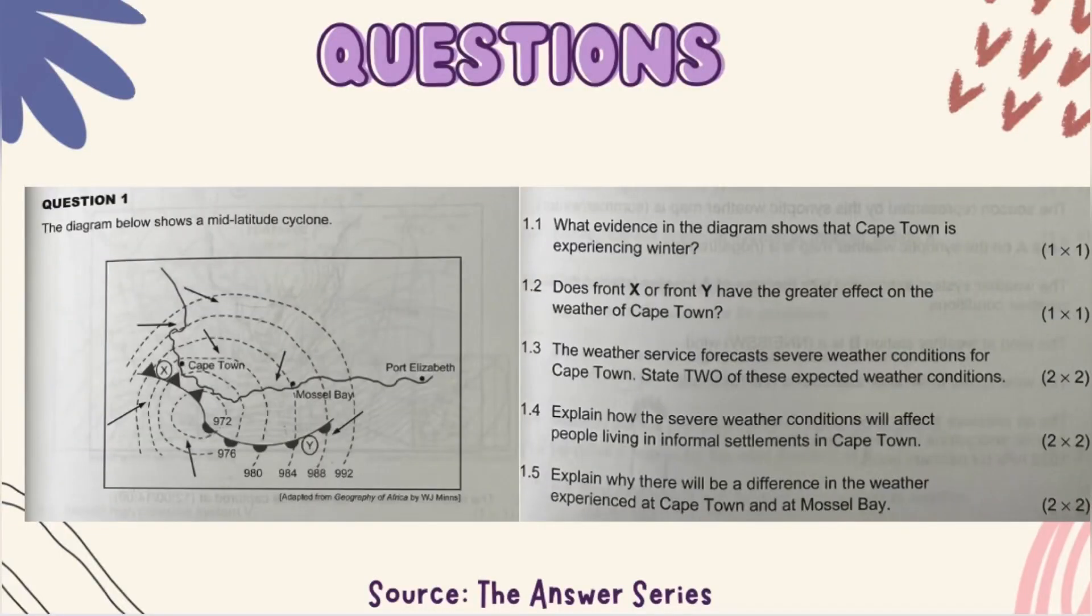I believe you learn better with questions. So the question tells us that the diagram below shows a mid-latitude cyclone. You won't always be that lucky that they tell you it's a mid-latitude cyclone because it could be part of the question where they ask you what it shows.